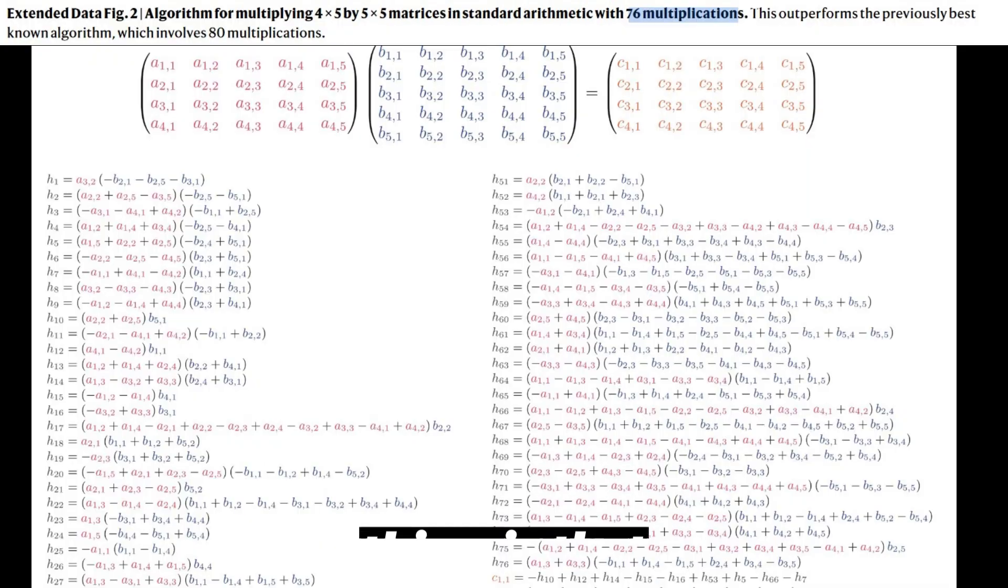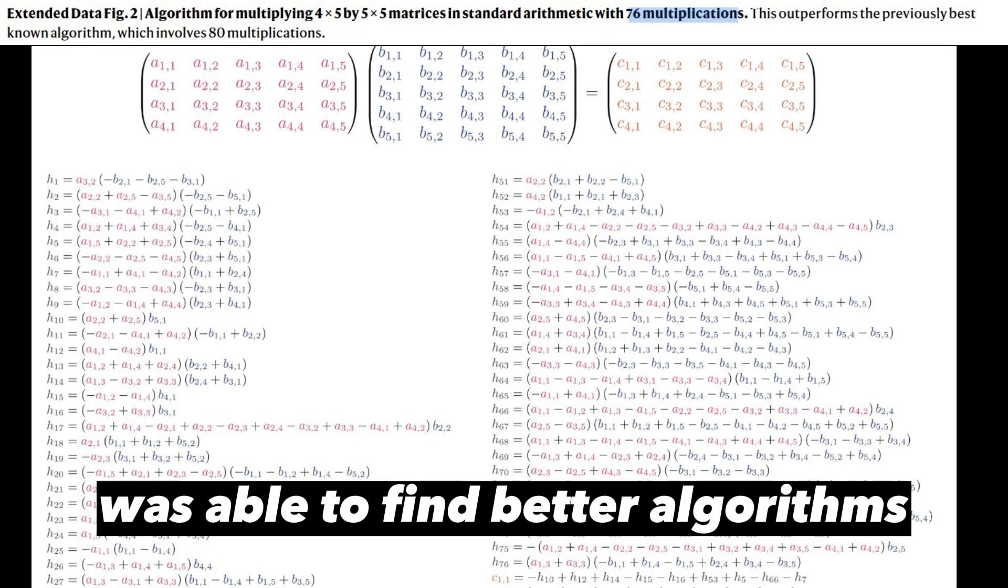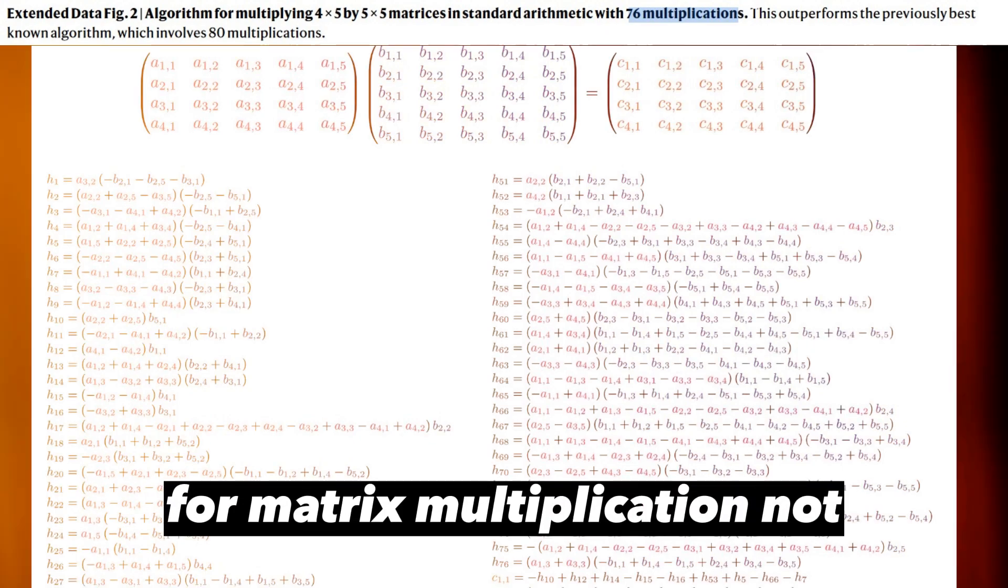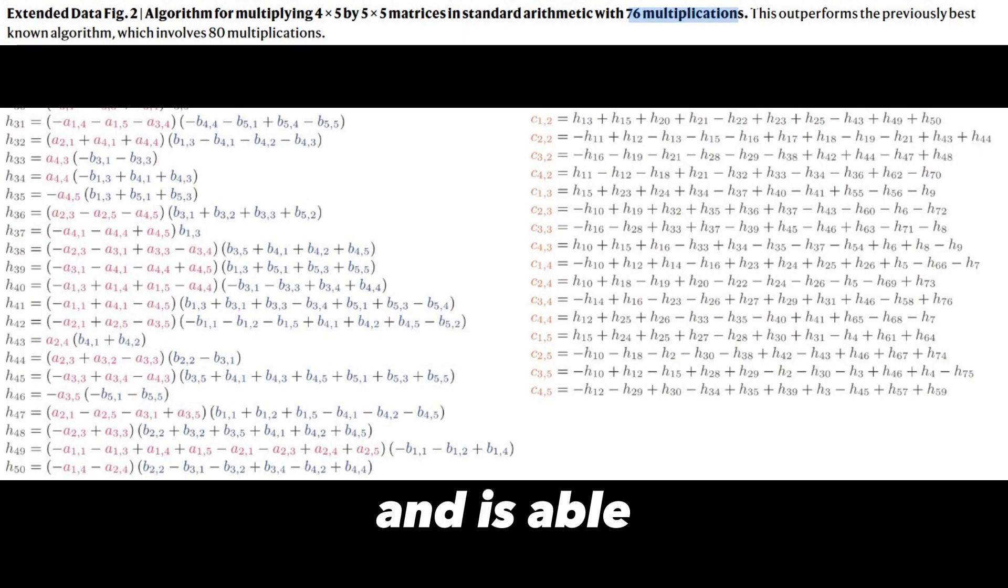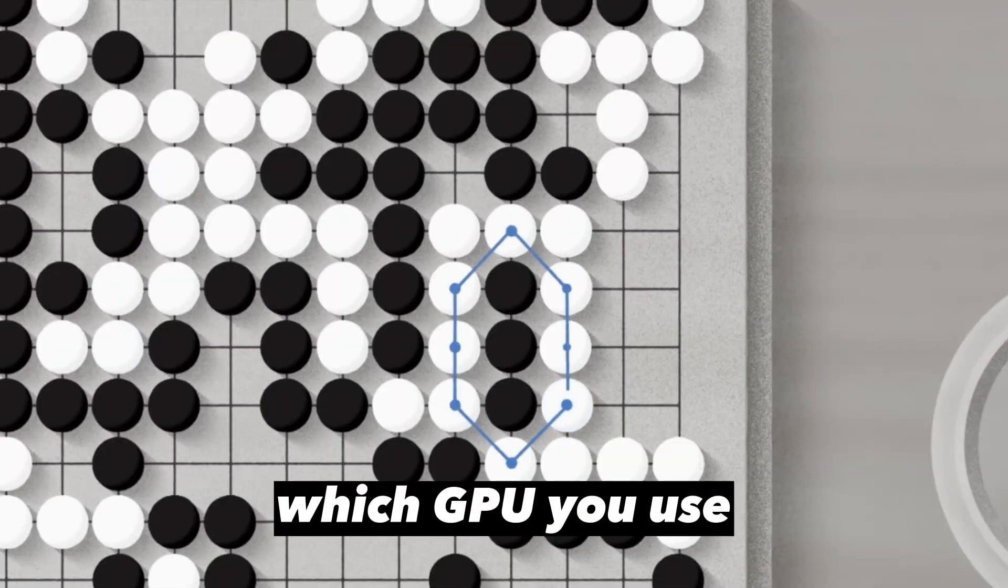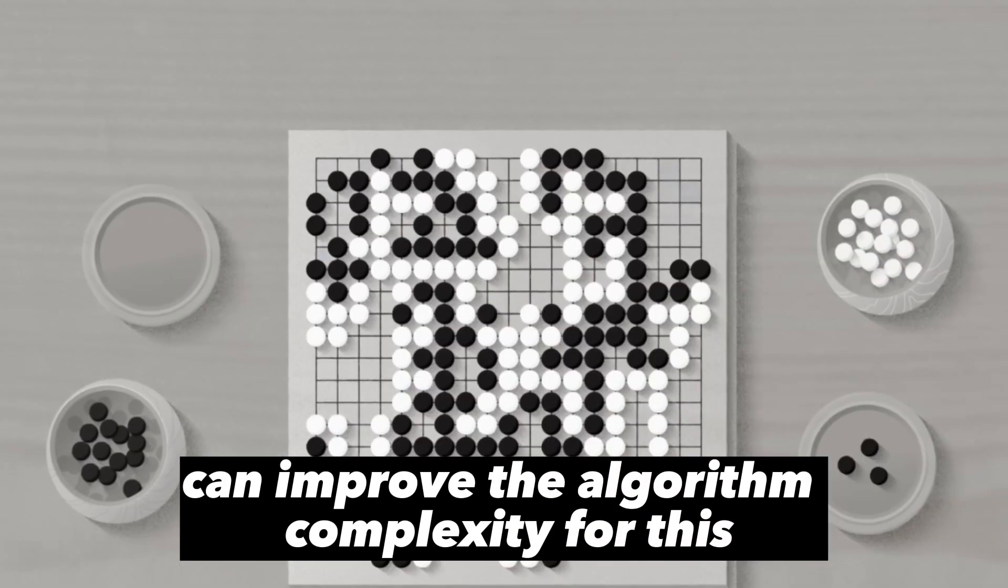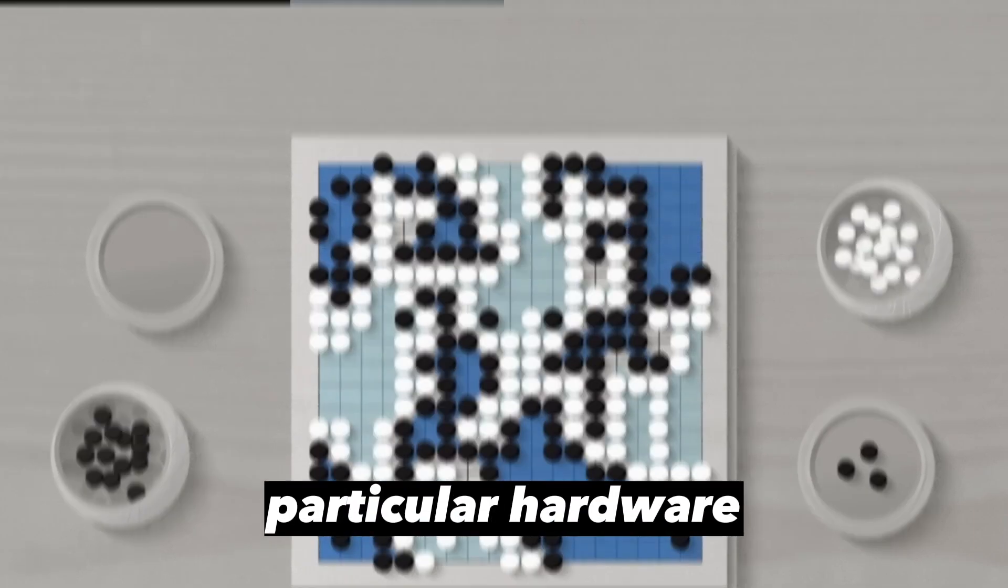The interesting thing is that AlphaTensor was able to find better algorithms for matrix multiplication not known before and is able to find faster algorithms for specific hardware. Depending on which GPU you use, this artificial intelligence can improve the algorithm complexity for this particular hardware.